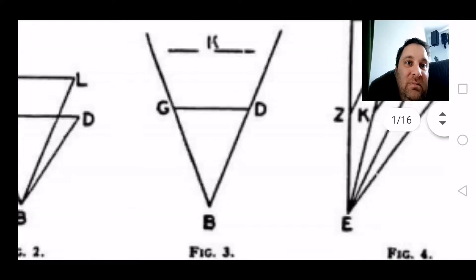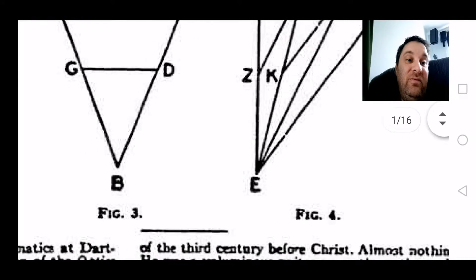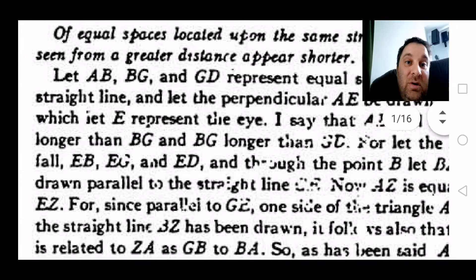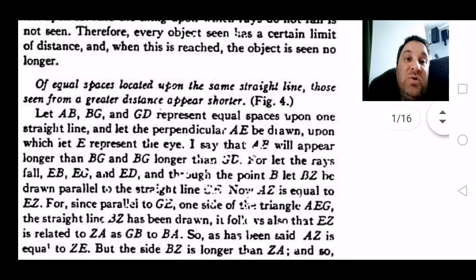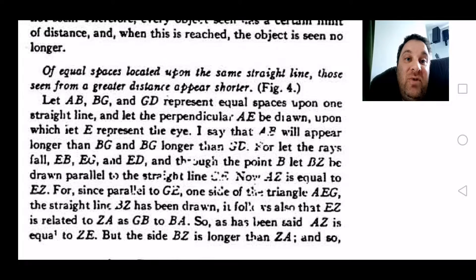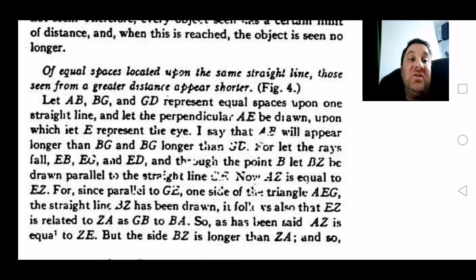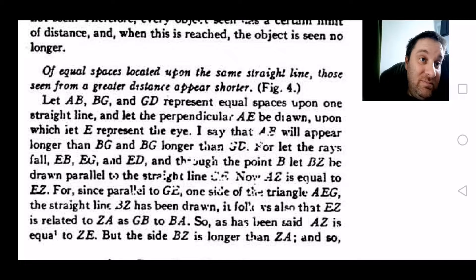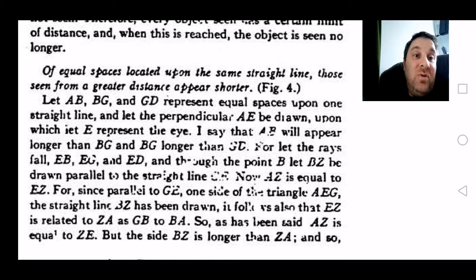I'm now on figure four, which is of equal spaces located upon the same straight line. Those seen from a greater distance appear shorter. So basically, if you look down a really long straight level road and you look at the street lights, they're all the same distance apart, they're all in a straight line. The ones further away appear shorter.